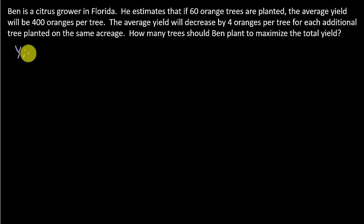So we've got the yield is equal to the number of trees times the number of oranges per tree.